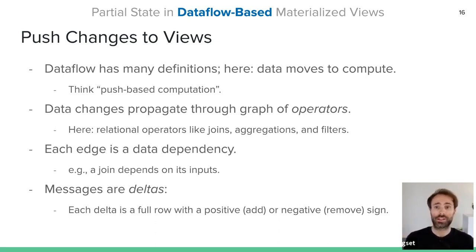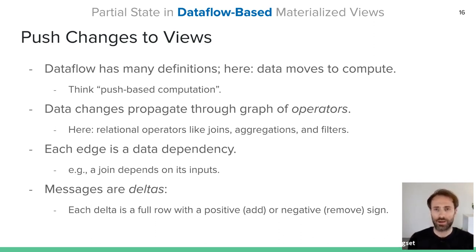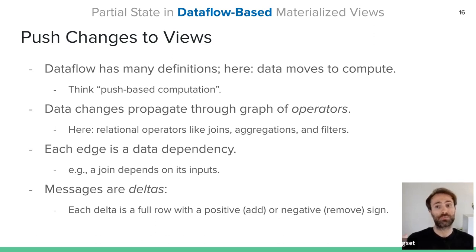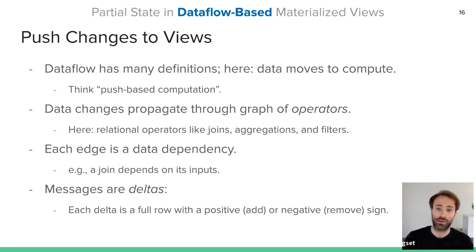Each edge of the dataflow indicates a data dependency — a join depends on all of its inputs, an aggregation depends on the data it's aggregating over. The messages flowing over edges are deltas: a full row with columns plus a sign, either positive or negative. A positive delta is an addition to previous results; a negative is a revocation. We'll look at this whole dataflow model in the context of Noria, an eventually consistent materialized view system built using dataflow.